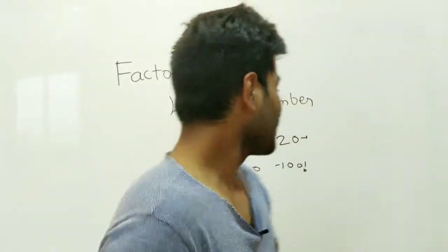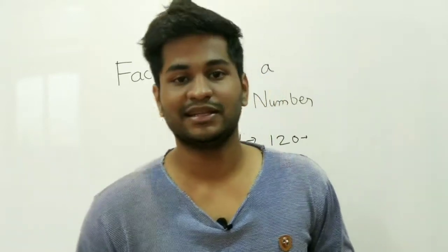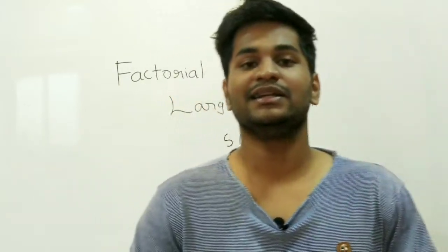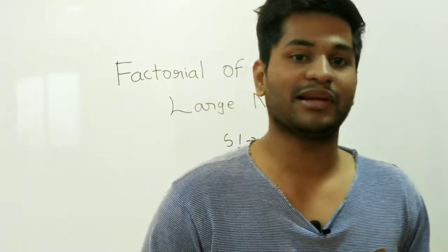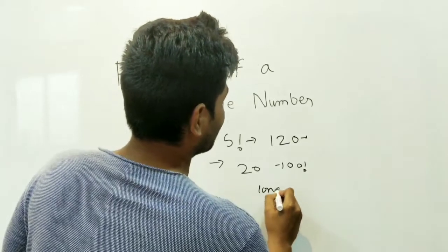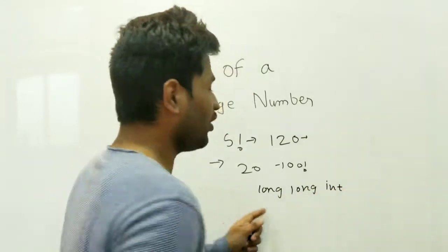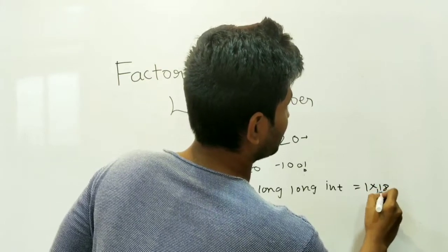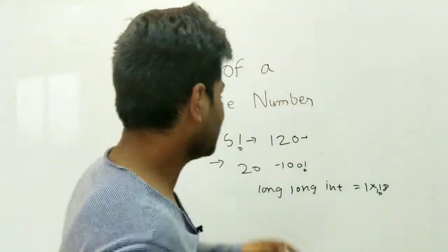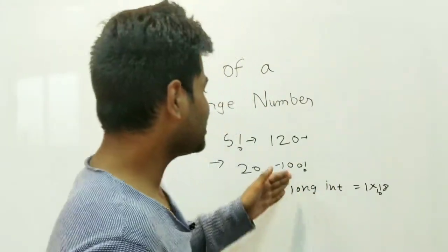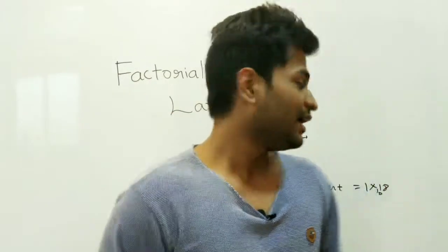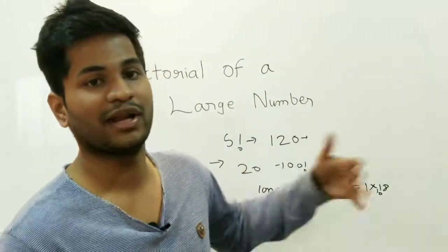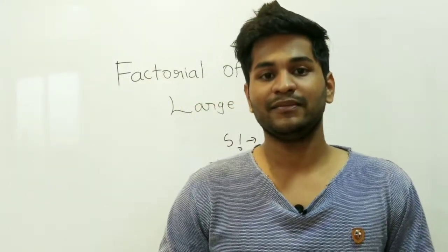In Python and Java there are built-in methods that handle large integers easily — Java has the BigInteger class and Python also handles big integers natively. But in C++ or C, even the long long int data type can only handle up to 1 × 10^18. When you find the factorial of 100, it contains hundreds of digits, which long long int cannot store. That's why we need to find the factorial of large numbers in a different manner.